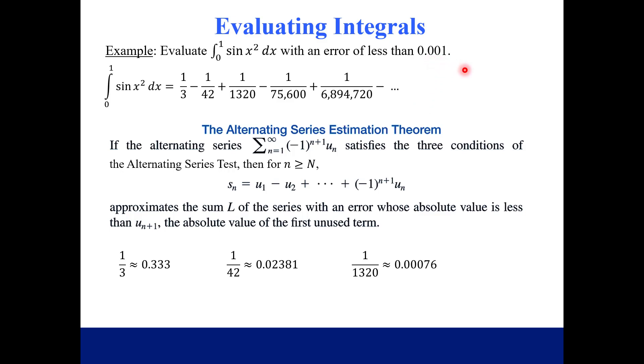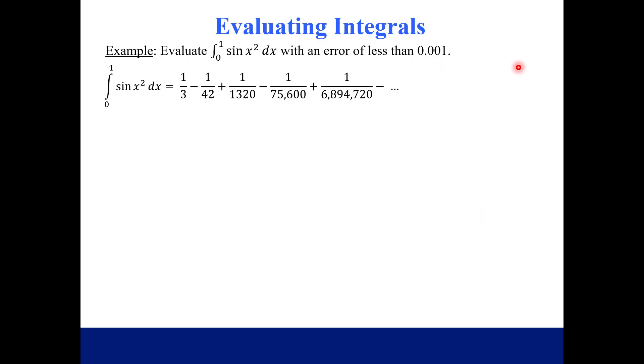We're going to keep that in mind, and from what we were working on, we only need the first two terms. This integral, evaluated from 0 to 1, is approximately 1 third minus 1 over 42, which is about 0.309. So our integral is about that amount, 0.30952, with an error less than the next term. That's one way to use our Taylor series.